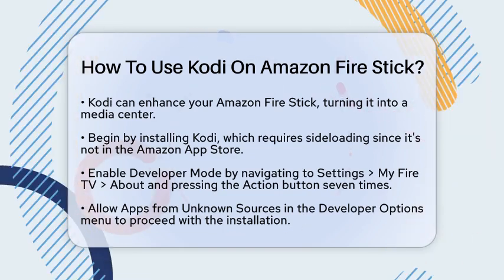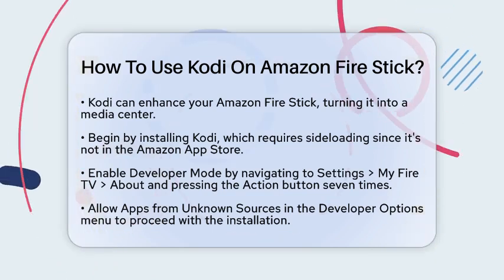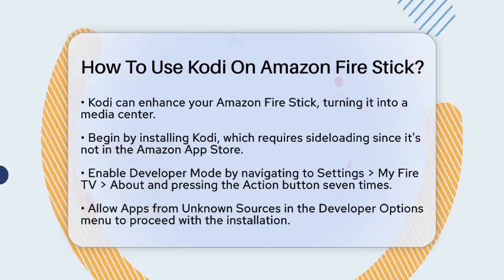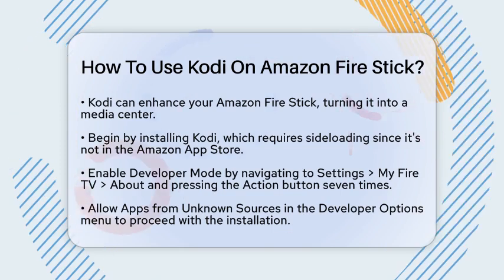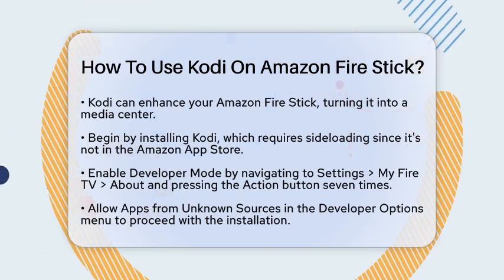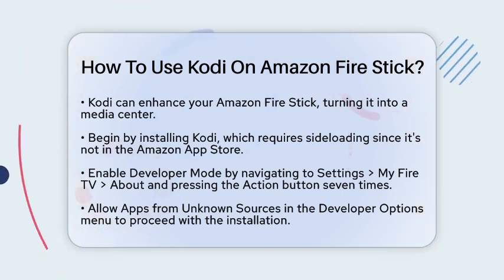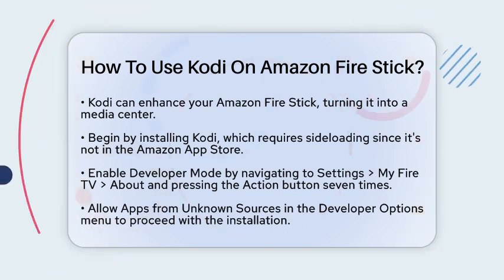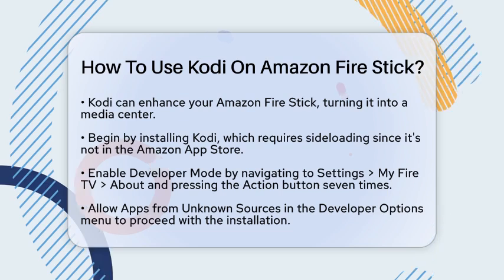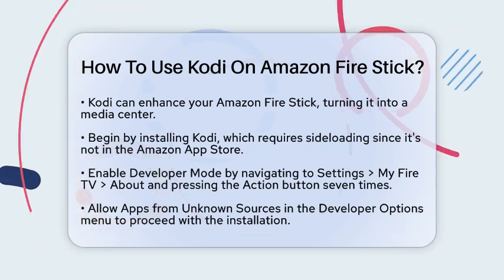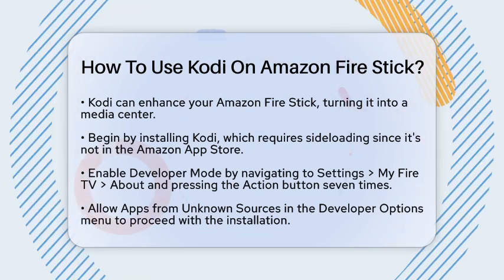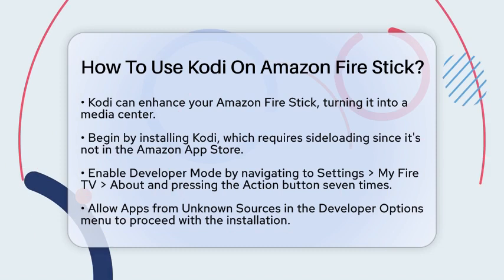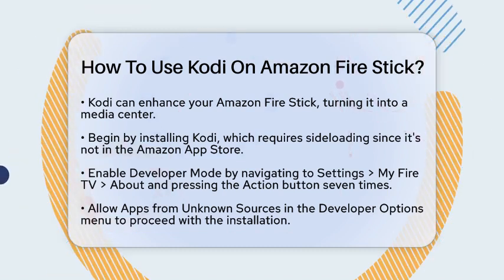First, you need to install Kodi on your Fire Stick. Since Kodi is not available on the Amazon App Store, you will have to sideload it. Start by enabling Developer Mode. Go to Settings, then My Fire TV and select About. Press the Action button seven times to enable Developer Options.